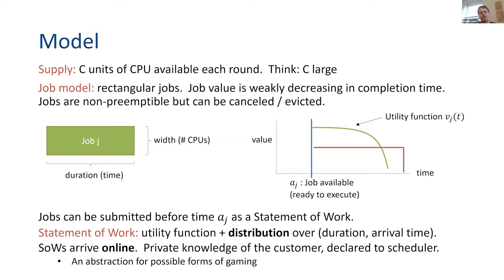Taken literally, this would mean customers are actually going in and declaring distributions to us. We're not saying that would be a realistic implementation of a cloud. The reason we're modeling it this way is to abstract all the different ways the customer might game the system. Rather than thinking of the customer trying to fool the prediction engine, we give the customer the power to tell us whatever distribution they want — so they can basically fool us however they'd like — and even then, we design things so that they're incentivized to tell us the true distribution.